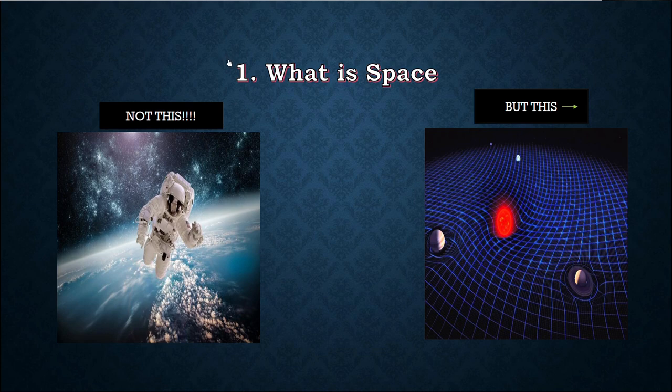Space is obviously not this one. Grammatically, by dictionary this is space but we are interested about this type of spaces. What is this one? This is actually a Riemannian manifold, a schematic diagram of that, and here it is being shown how gravity arises.